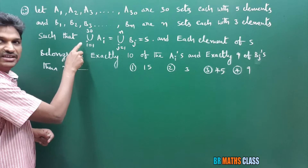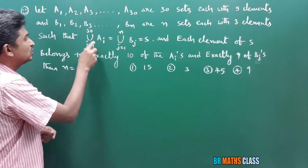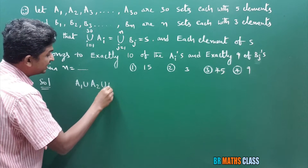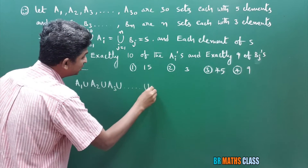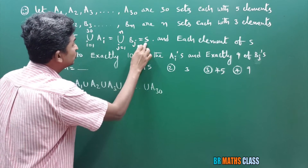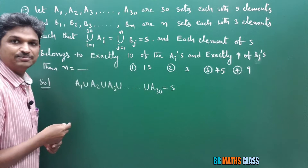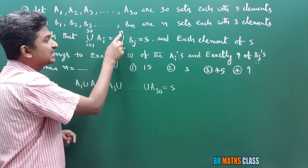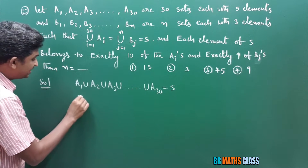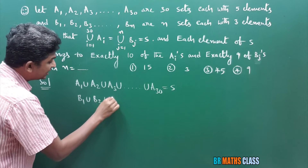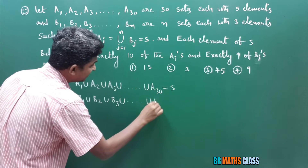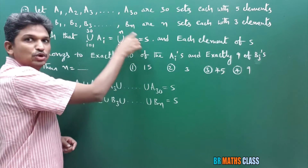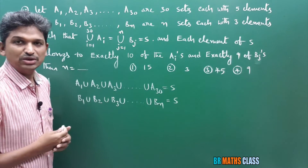Now you observe this. What they have given? Union of i equal to 1 to 30 of Ai is given as S. It means A1 union A2 union A3 — like that, if you do the union of all 30 sets, you are going to get the set S. Similarly, union of Bj, j from 1 to N, is S. This is nothing but B1 union B2 union B3 — total N sets — and union of all these sets gives you S.